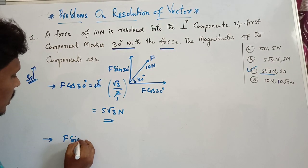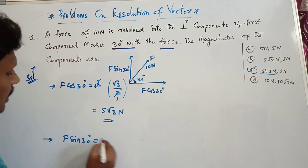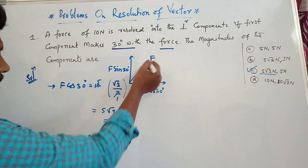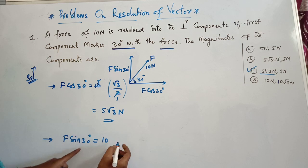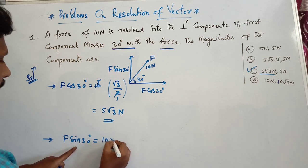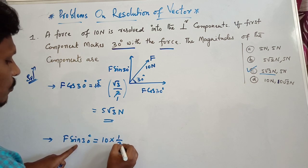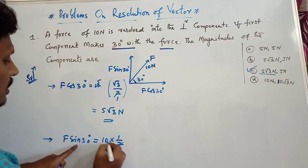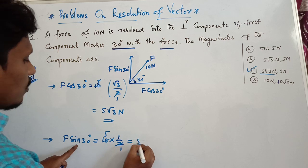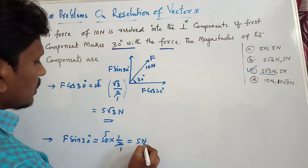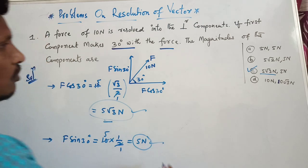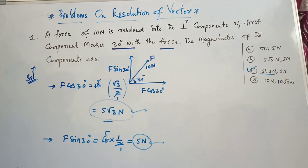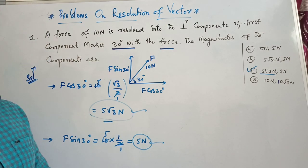Now the vertical component: F sin 30°. That is F = 10, and sin 30° = 1/2. So 10 × 1/2 = 5 Newtons. So the two components are 5√3 Newtons and 5 Newtons. That is the answer. So option C — 5√3 Newtons and 5 Newtons — is correct. Thank you. Now let us see the second question.